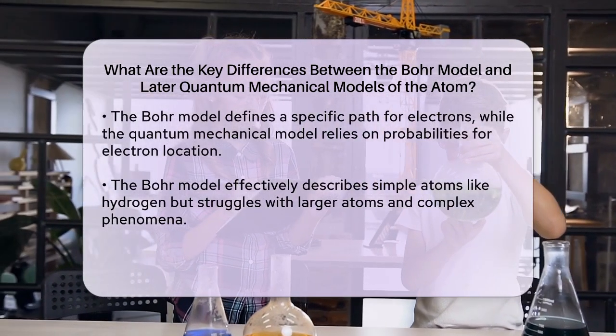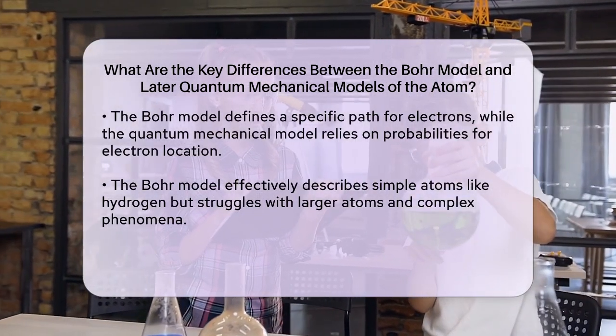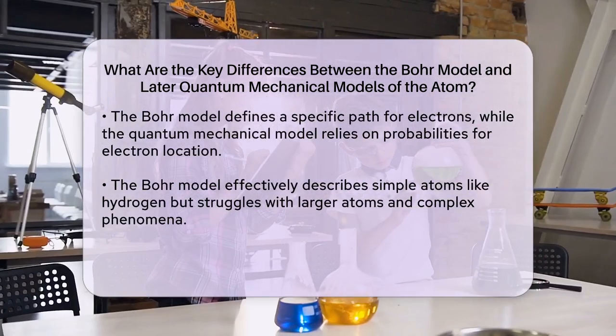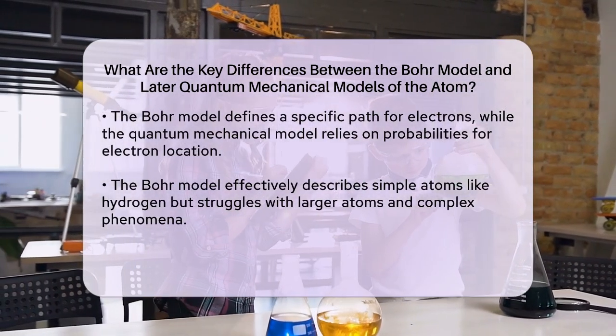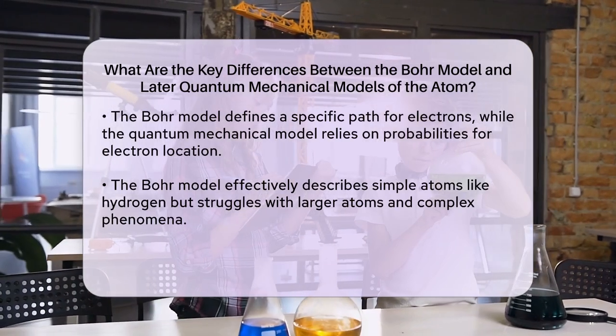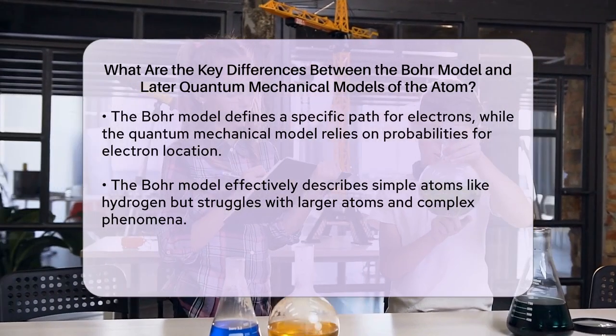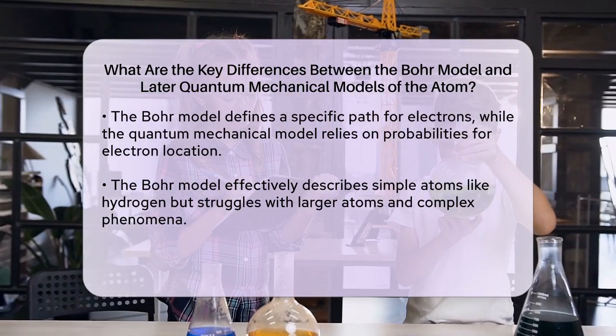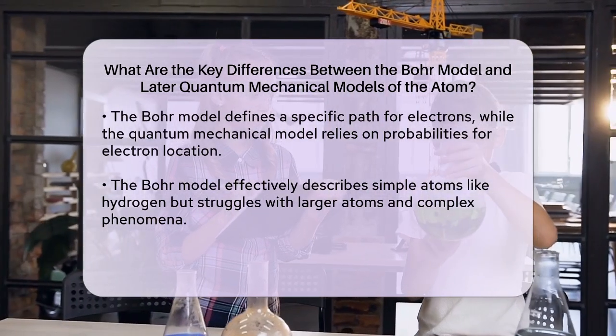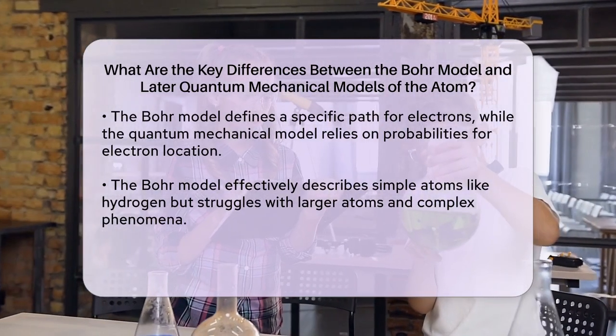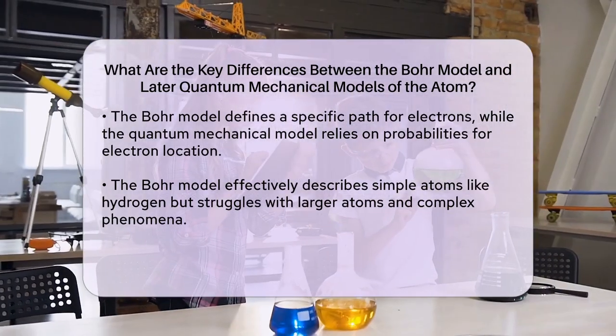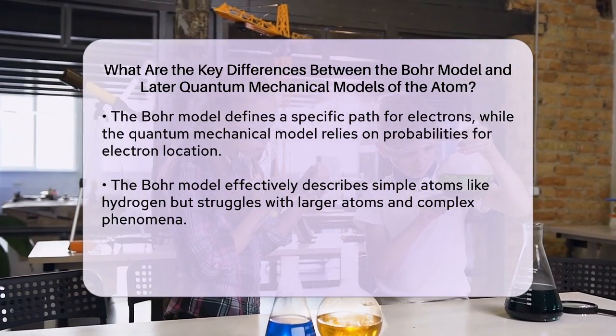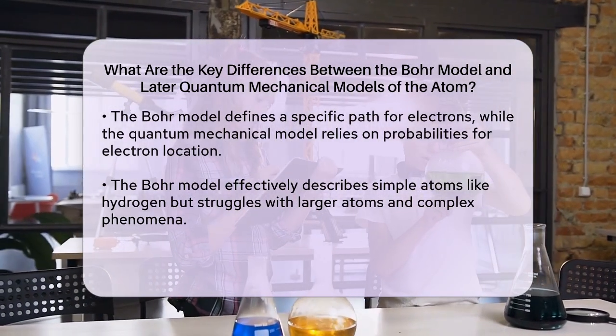The Bohr model works well for simple atoms like hydrogen, which has only one electron. However, it fails to explain the atomic spectra of larger atoms and phenomena like the Zeeman and Stark effects, which are the effects of magnetic and electric fields on atomic spectra. The quantum mechanical model, on the other hand, can accurately explain these effects, and is applicable to all types of atoms, regardless of their complexity.